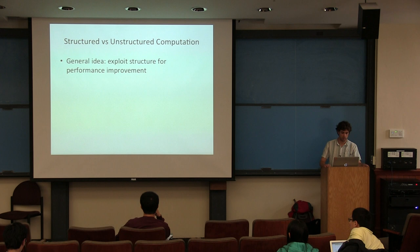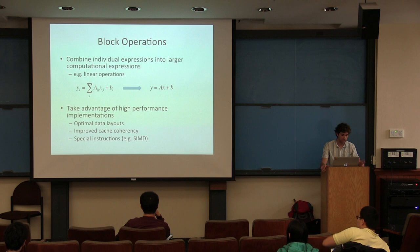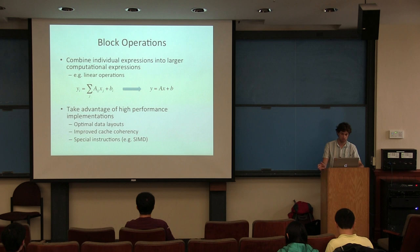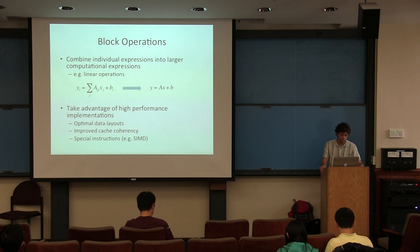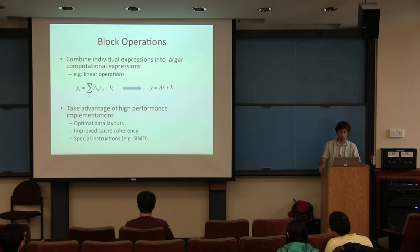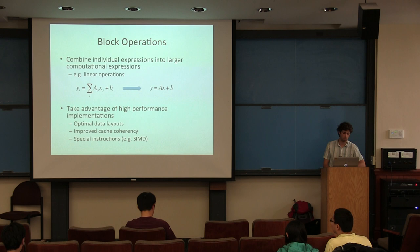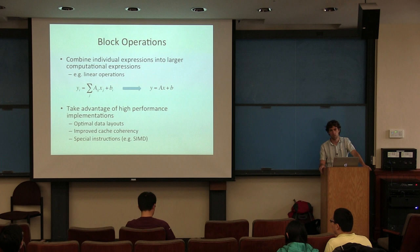One of the fundamental things we want to do is combine individual expressions into larger computational expressions. A fundamental building block of all neural networks are just linear operations — computing the value of a single neuron y from input values x using coefficients, plus a constant b. Typically you have big blocks of these outputs, so you want to turn this into a blockwise operation — a matrix multiply. This allows you to take advantage of high-performance implementations that use optimal data layouts, improved cache coherency, and can automatically take advantage of special instructions such as SIMD. On Intel CPUs you can push through four floating point operations per cycle rather than just one.